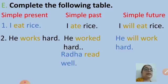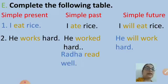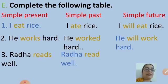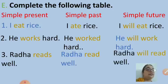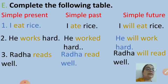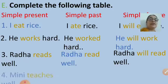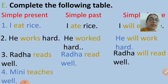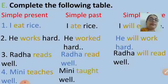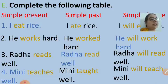In the third sentence, a simple past tense example is given: Radha read well. Although the spelling remains the same, we pronounce the verb 'read' differently when it is used in past tense. The present tense will be: Radha reads well. And the future tense: Radha will read well. Fourth sentence: Mini teaches well. Past tense will be: Mini taught well. And future tense: Mini will teach well.